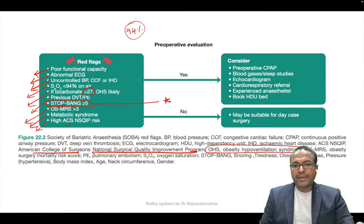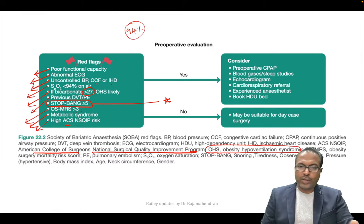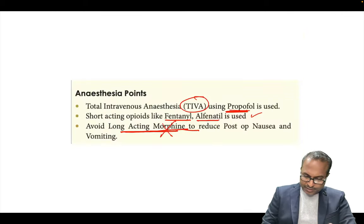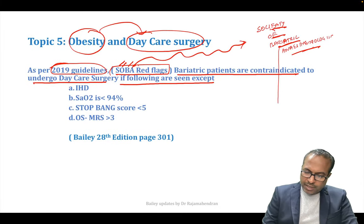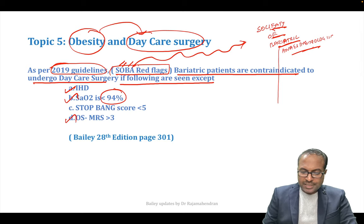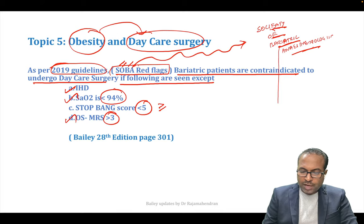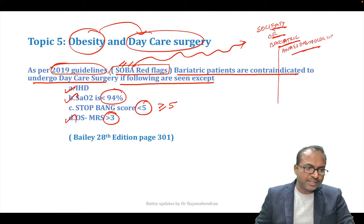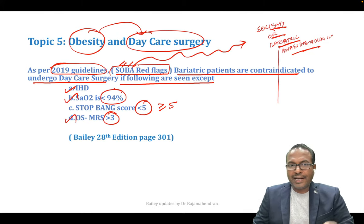Old edition said no obese patient should be operated as daycare. New Bailey says you can operate certain bariatric patients with criteria. If ischemic heart disease, saturation less than 94%, obesity surgery mortality risk score more than 3, or STOP-BANG ≥5 — do not operate as daycare. Less than 5, you can. Very important update from obesity and daycare surgery based on SOBA guidelines.